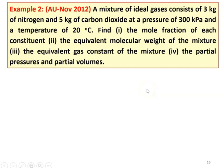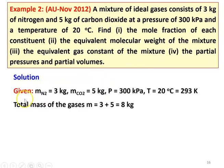In example number 2, from the November 2012 question paper: A mixture of ideal gases consists of 3 kg of nitrogen and 5 kg of carbon dioxide at a pressure of 300 kilopascal and temperature of 20 degree Celsius (293 Kelvin). Find the mole fraction of each constituent, equivalent molecular weight, equivalent gas constant, partial pressure, and partial volumes of the individual gases. Total mass of the mixture M equals 3 plus 5, which is 8 kg.